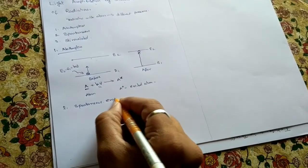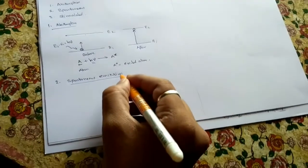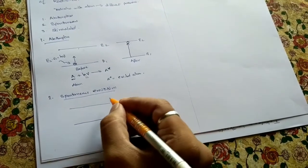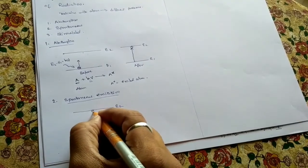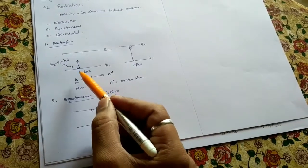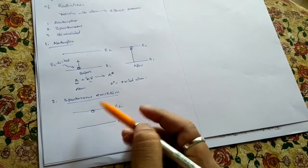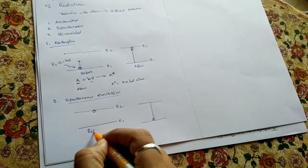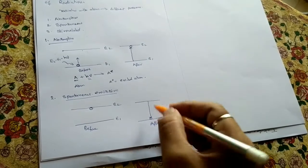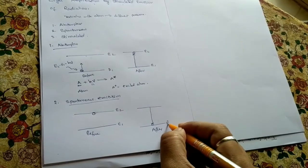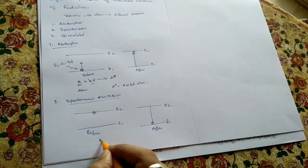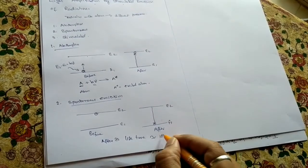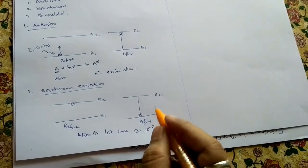The second process is spontaneous emission. Again with two energy levels E1 and E2: an atom at the ground state absorbs energy and reaches the excited state. After its lifetime — approximately 10 to the power of minus 8 seconds — the excited atom returns to the ground state.